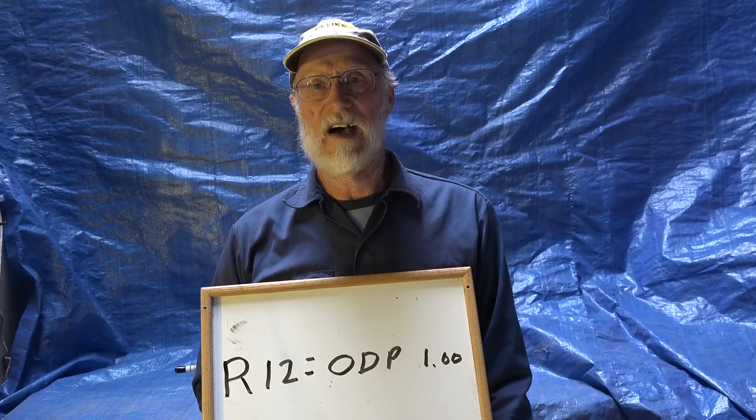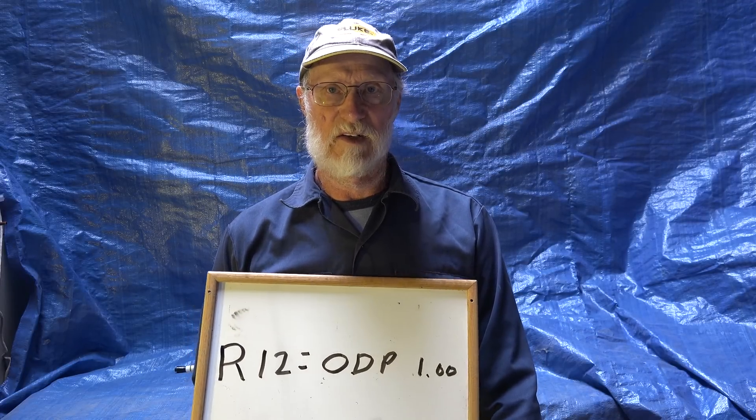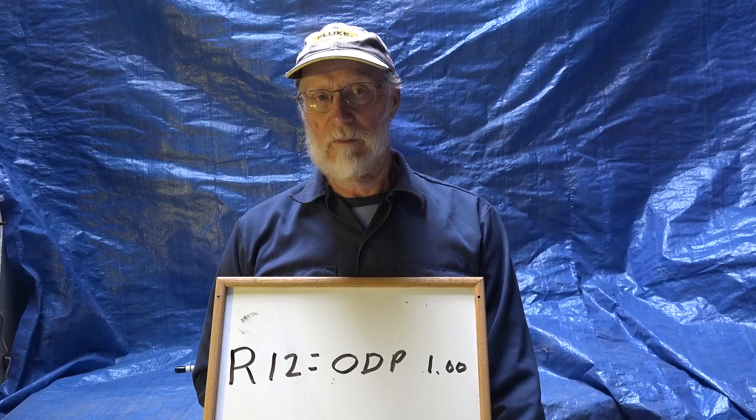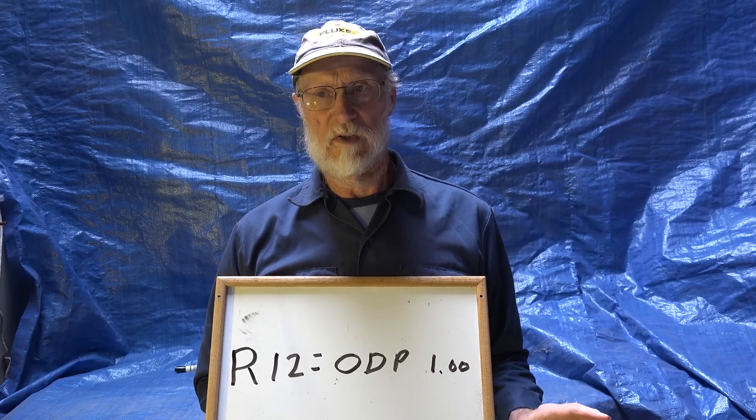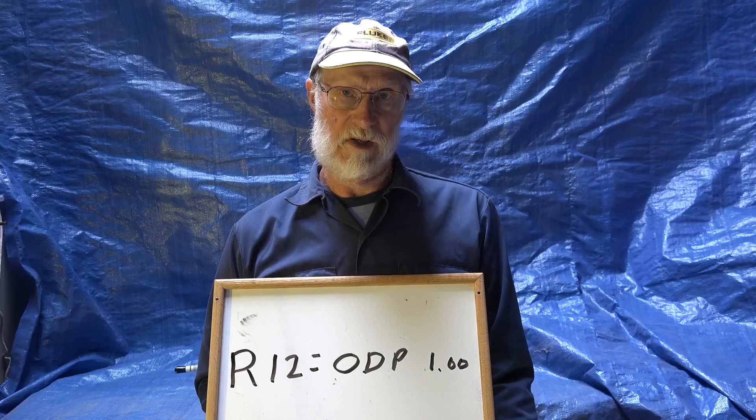R12 has an ozone depletion potential of one — that's the highest; everything else is a percentage of one. So because it was one of the worst refrigerants for ozone depletion, we stopped using it. I think around 1992 we stopped using it. There were some replacements for it, which I'll go into later, but ozone depletion potential was the reason we started changing refrigerants, and especially why we stopped using R12.